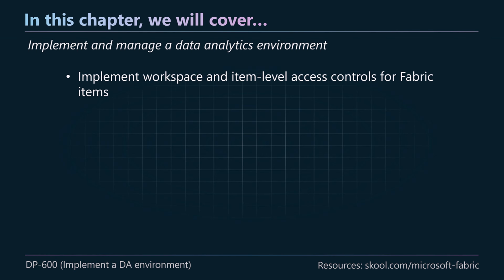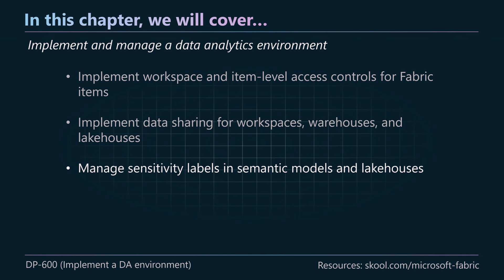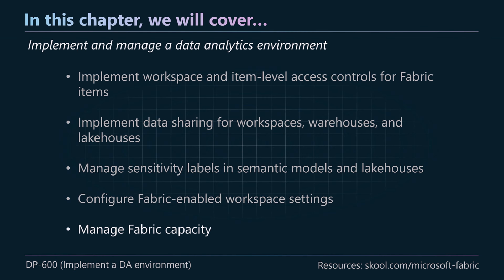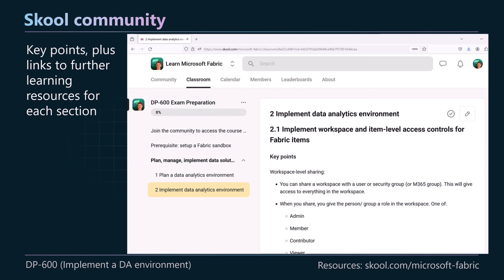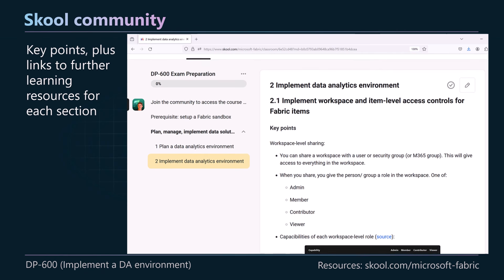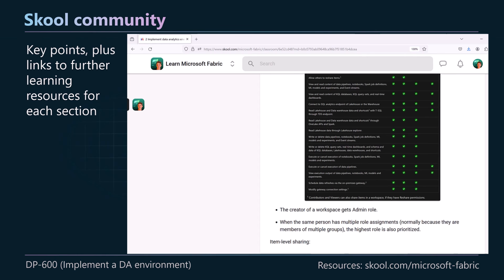Number one, we're going to be looking at implementing workspace and item level access control, implementing data sharing for workspaces, warehouses and lake houses, managing sensitivity labels, configuring fabric enabled workspace settings, and managing fabric capacity. We've got five sample questions at the end of the video to test your knowledge. I'll be posting the key points and links to further resources in the school community available for free — I'll leave a link in the description.